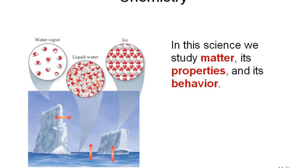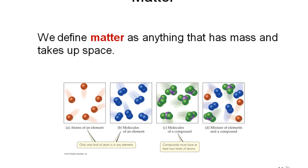What do we mean by matter? Matter is defined as anything that can occupy space and which has mass. One common mistake we make is we cannot differentiate between matter and energy. Light and heat, for example — are they matter or energy forms? They are just energy forms: light energy, heat energy. They do not have any mass. They do not occupy space. So light and heat are forms of energy, not matter.